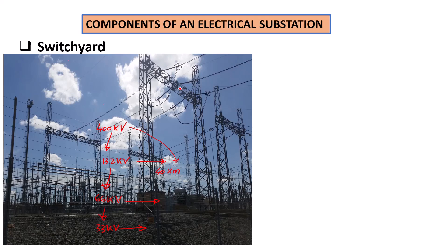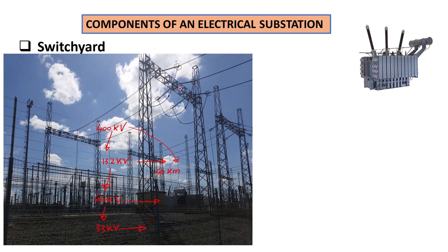All these components are important and they each perform certain tasks. Some of the most obvious components to find on a switch yard will be a power transformer — this is the main one. It is the one that will take your 400 kilovolt and step it down to 132 kilovolt or any other voltage level.